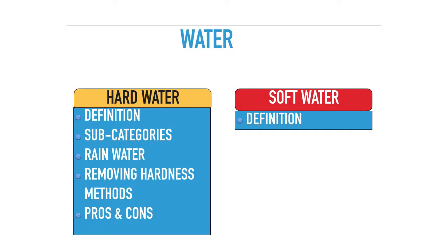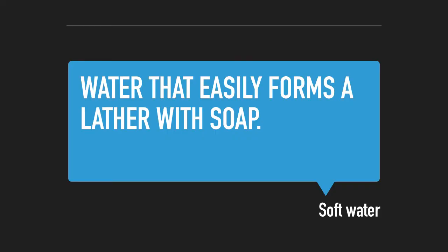Water is divided into two categories: hard water and soft water. Both have distinct differences, and you should be familiar with both terms already. For your leaving certificate, you only need to know hard water. We will begin with soft water first. It is simply defined as water that does form a lather easily with soap. Soft water does not cause limescale easily.